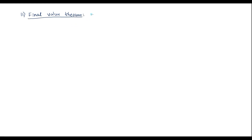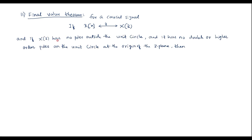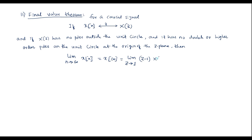This theorem states that for a causal signal, if the Z-transform of signal x of n is x of z, and if x of z has no poles outside the unit circle and has no double or higher order poles on the unit circle at the origin of the z-plane, then the limit as n tends to infinity of x of n equals x of infinity, which equals the limit as z tends to 1 of (z minus 1) times x of z.